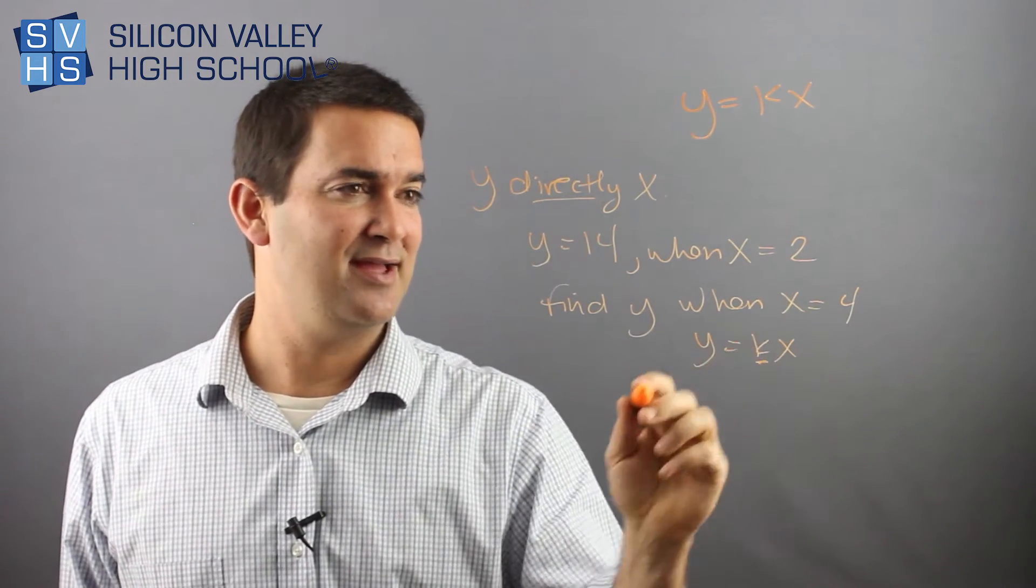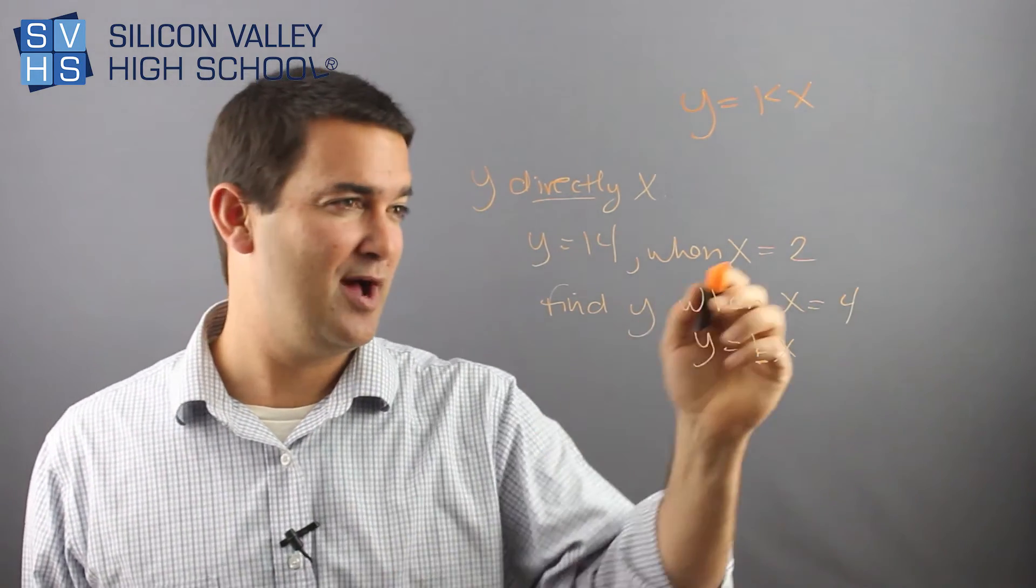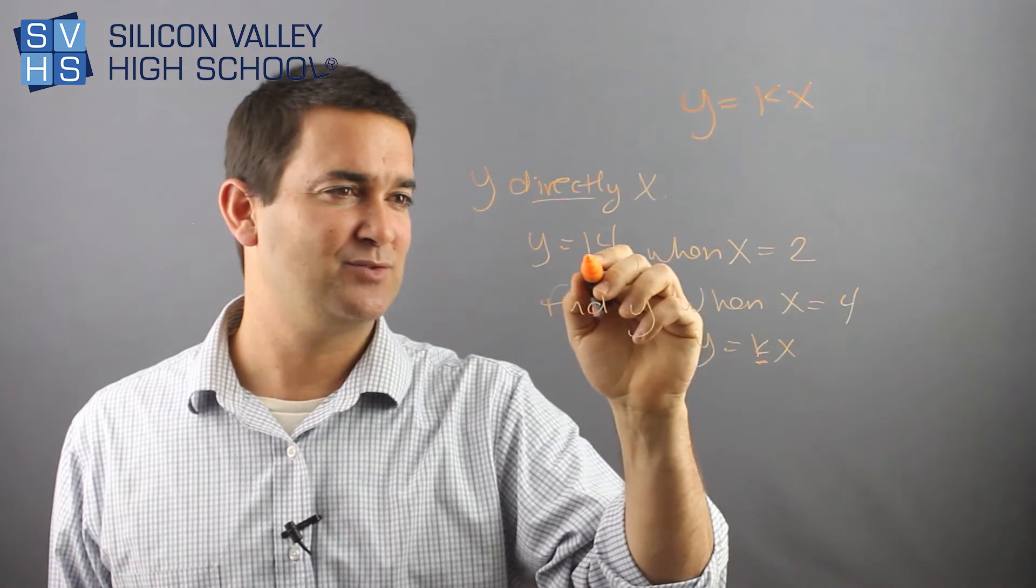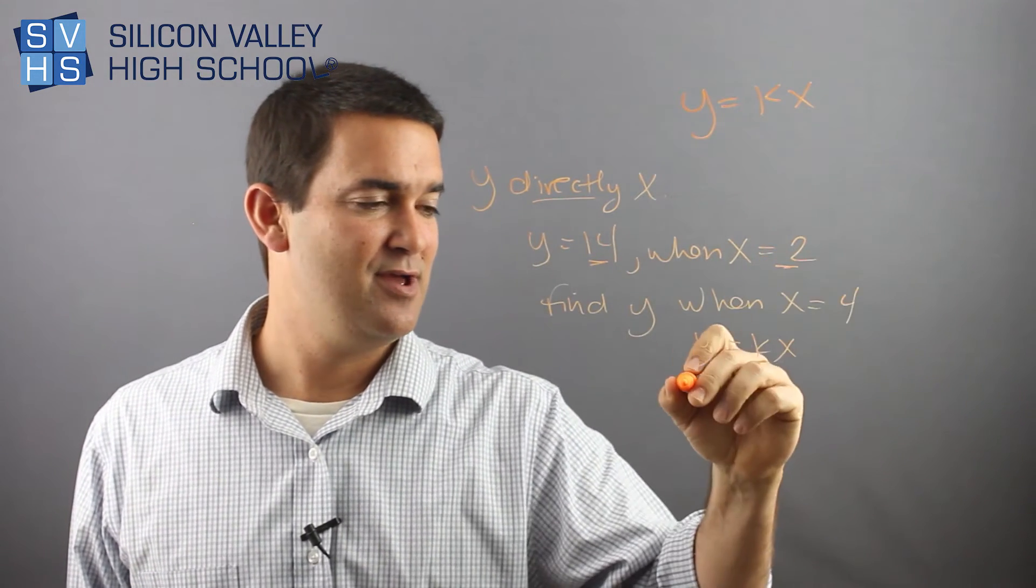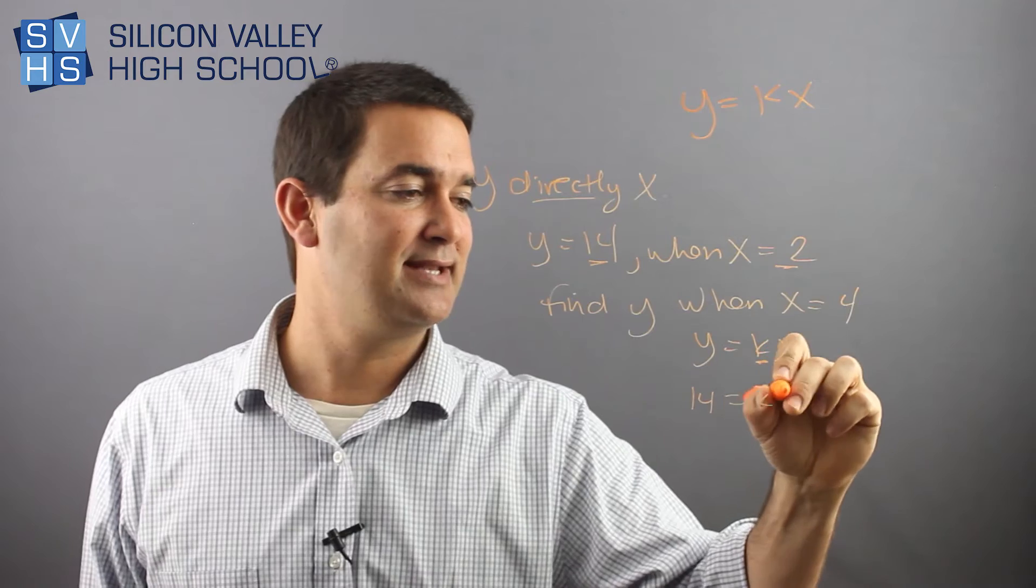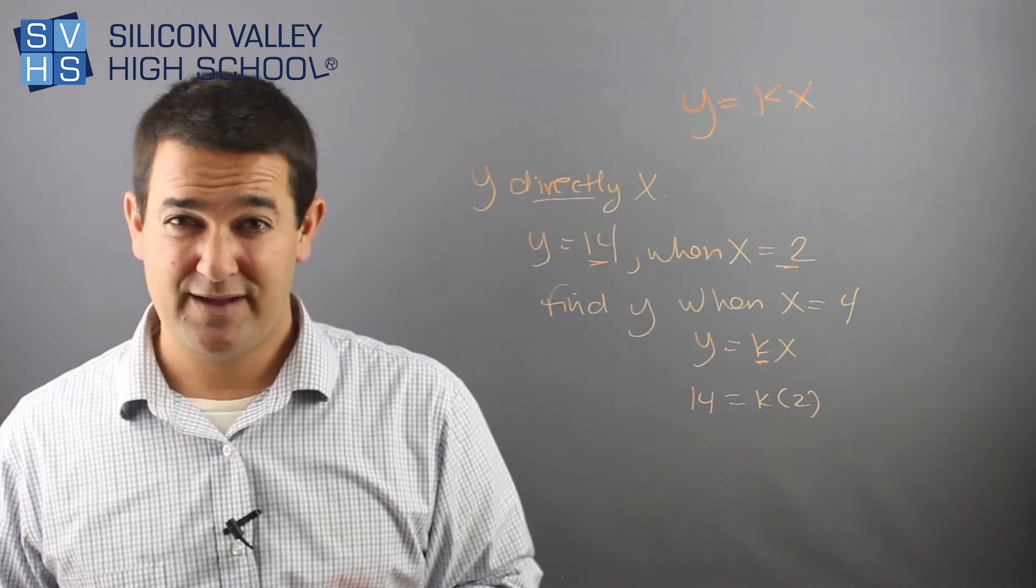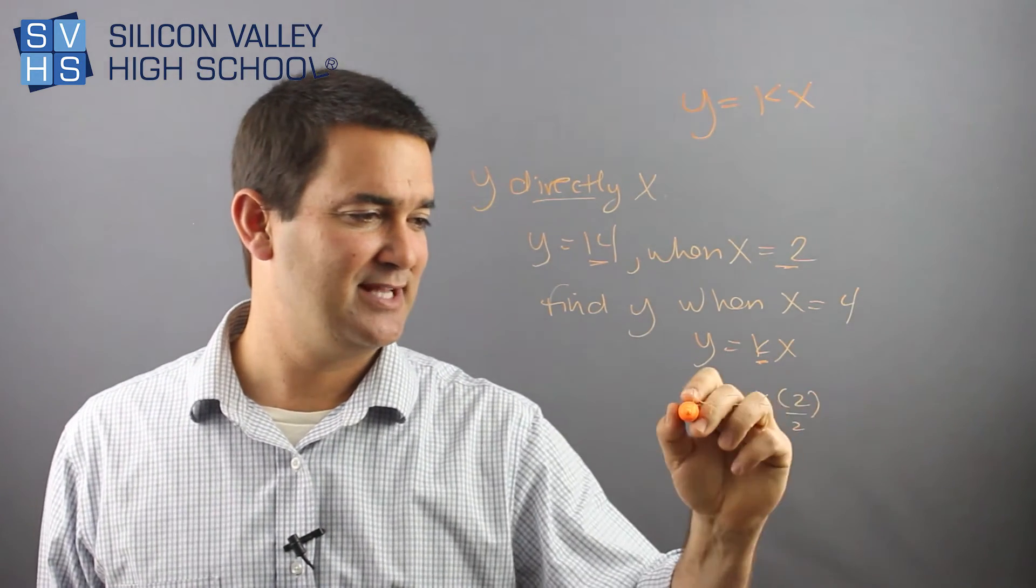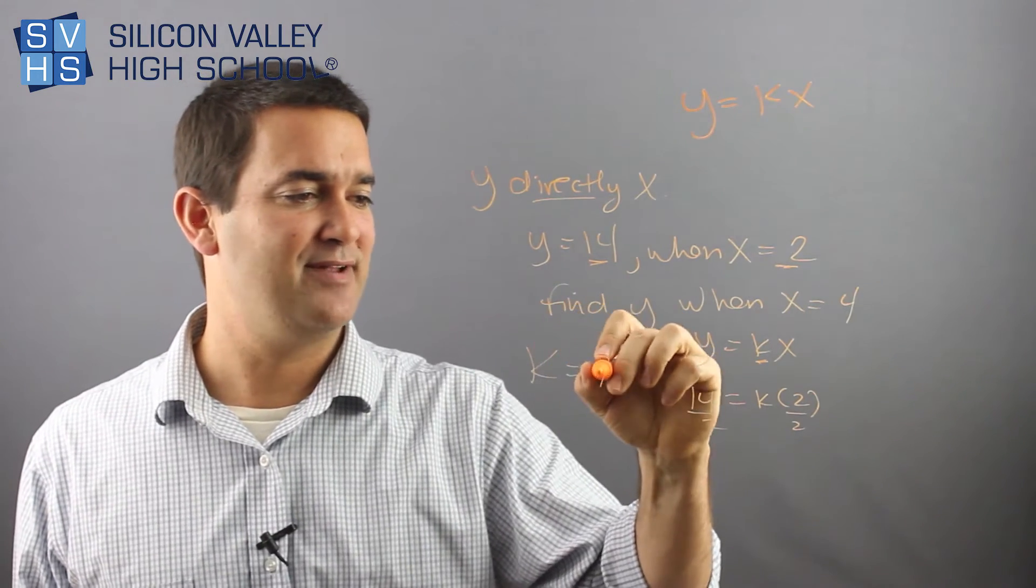Now I need to solve for k using my first x and y. Well, here it is. My first y was 14, my first x was 2. 14 equals k times 2. Solving for k, obviously I divide both sides by 2, and then I am left with k equals 7.